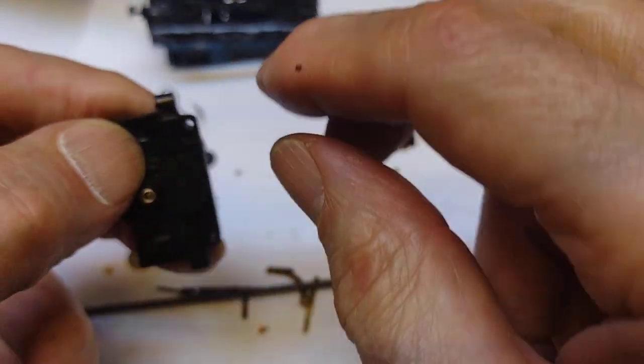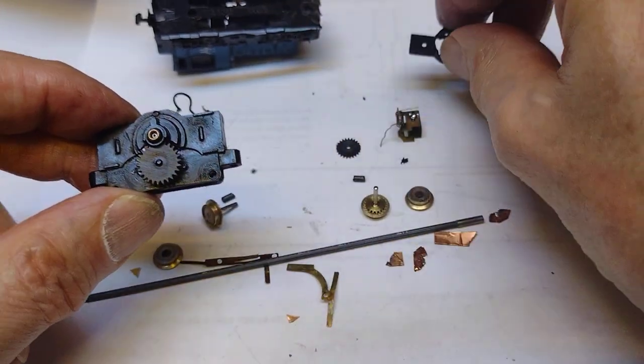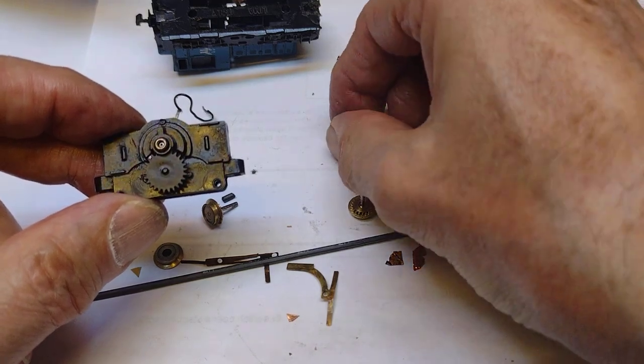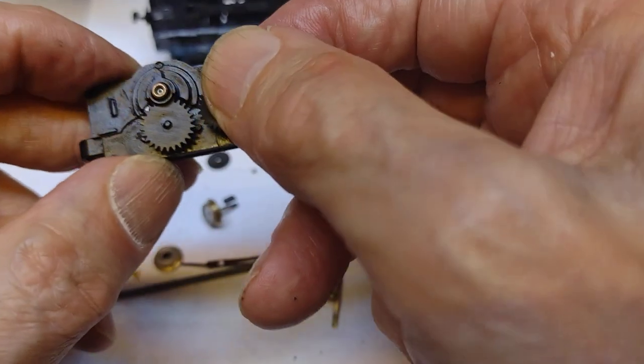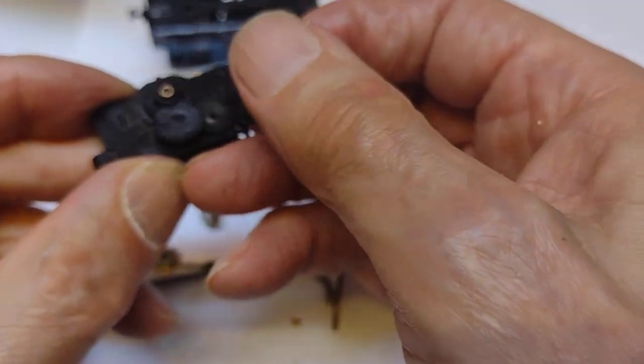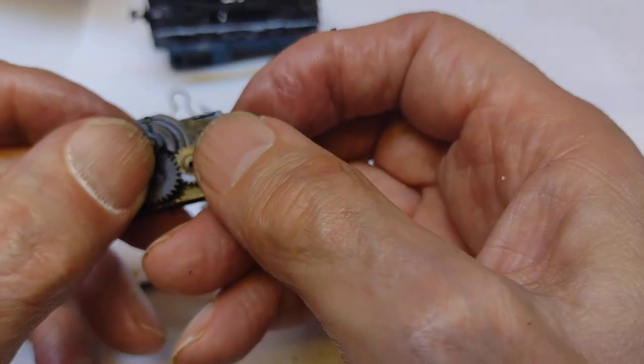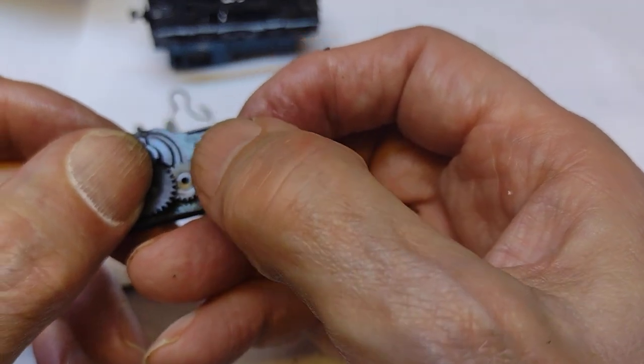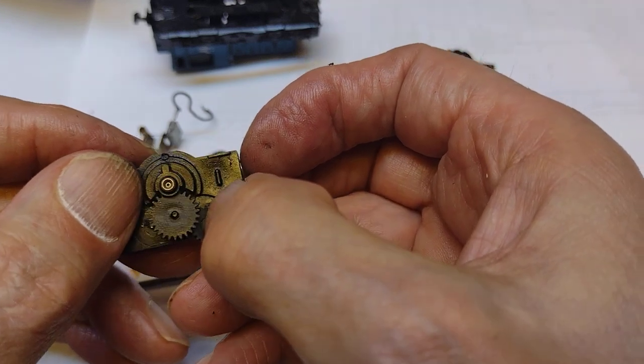Then we need some little gear wheels. Put two gear wheels, see if I can get these on. They go on shafts that are just underneath. Once they're on their shaft, must be there somewhere.